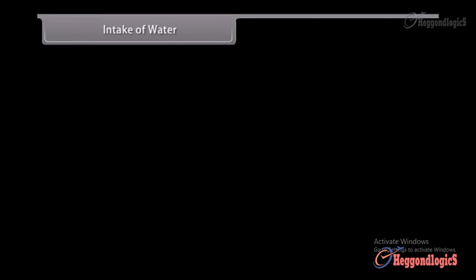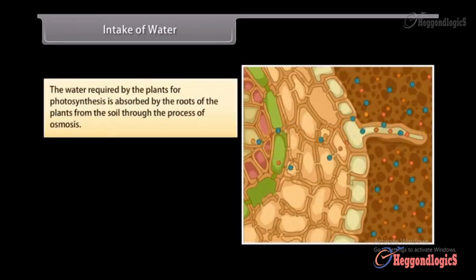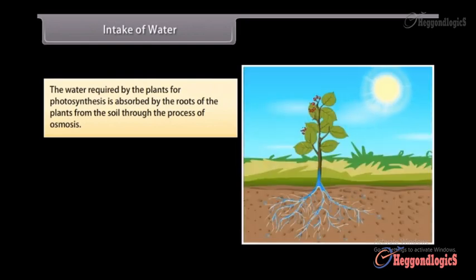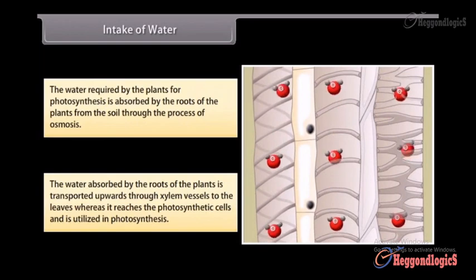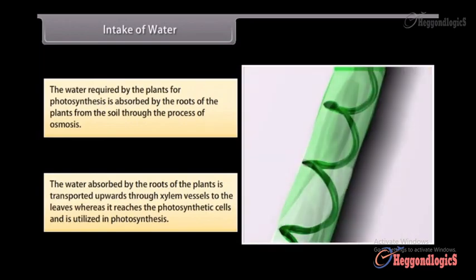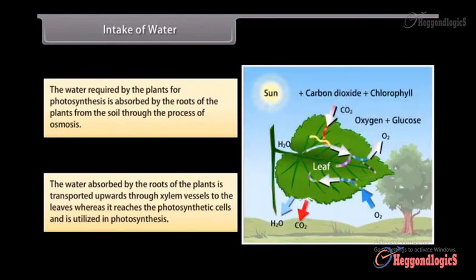Intake of water. The water required by the plants for photosynthesis is absorbed by the roots of the plants from the soil through the process of osmosis. The water absorbed by the roots of the plants is transported upward through xylem vessels to the leaves where it reaches the photosynthetic cells and is utilized in photosynthesis.